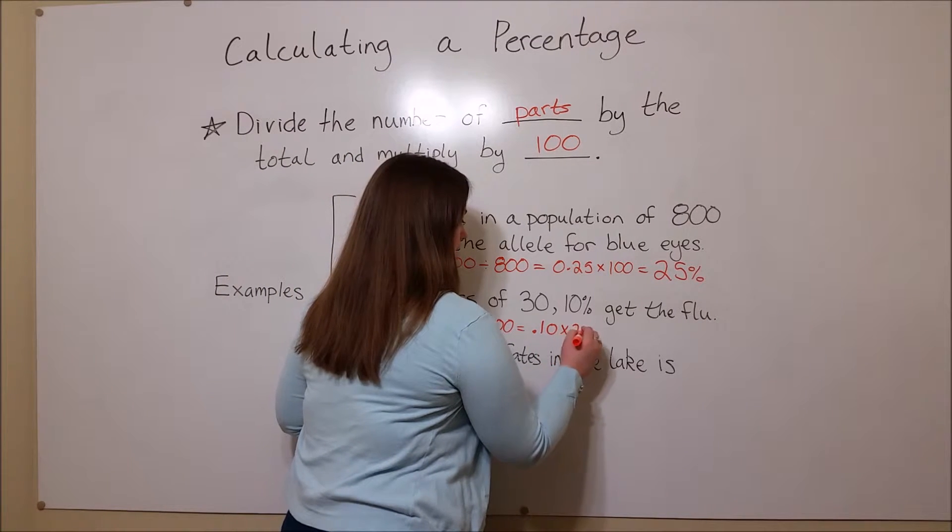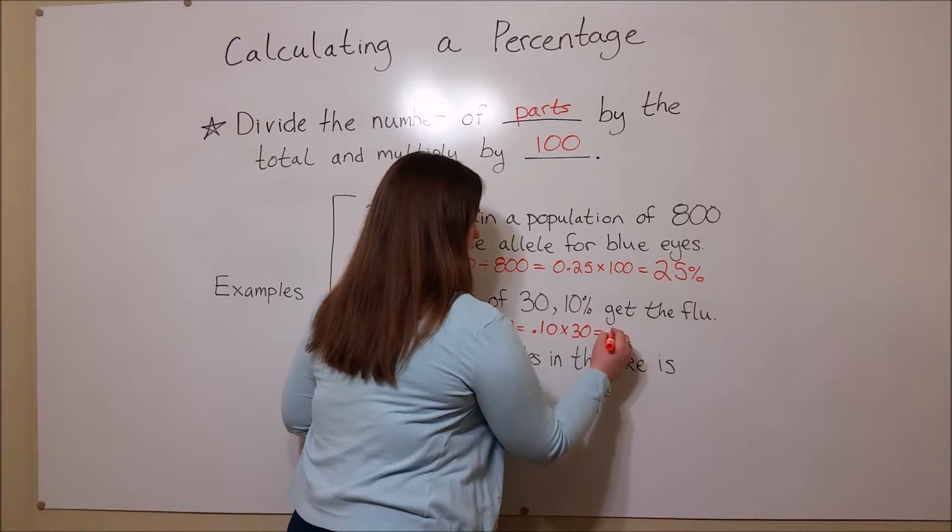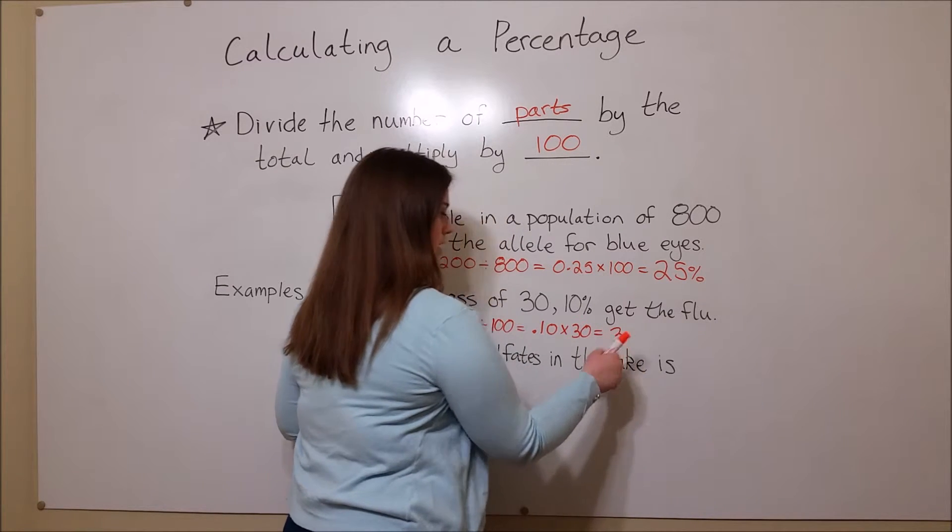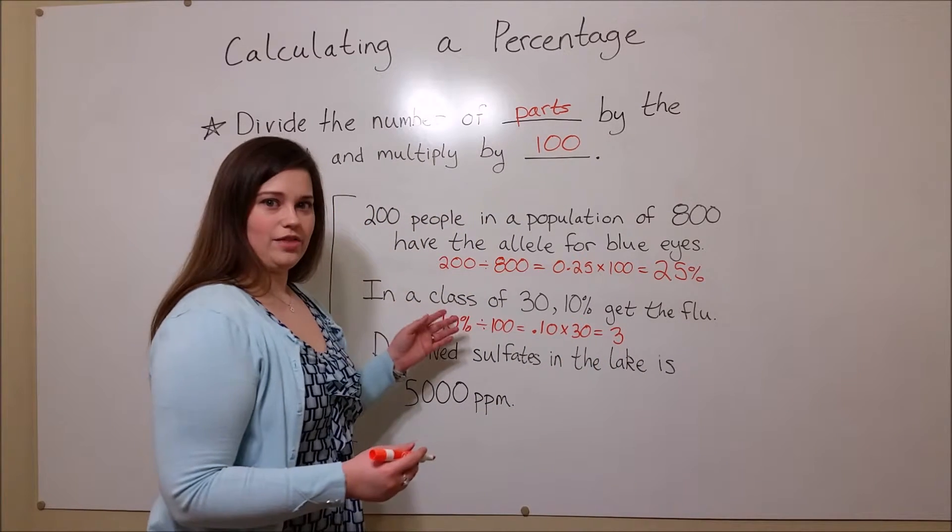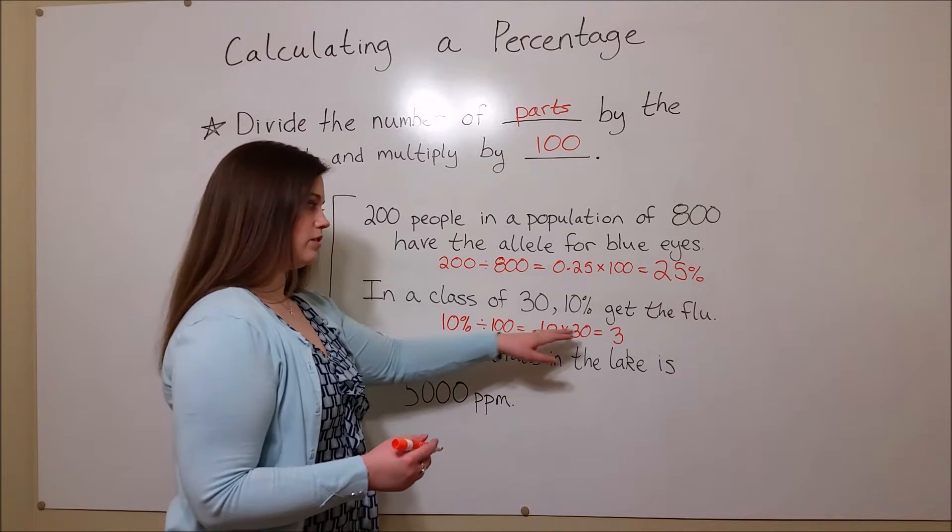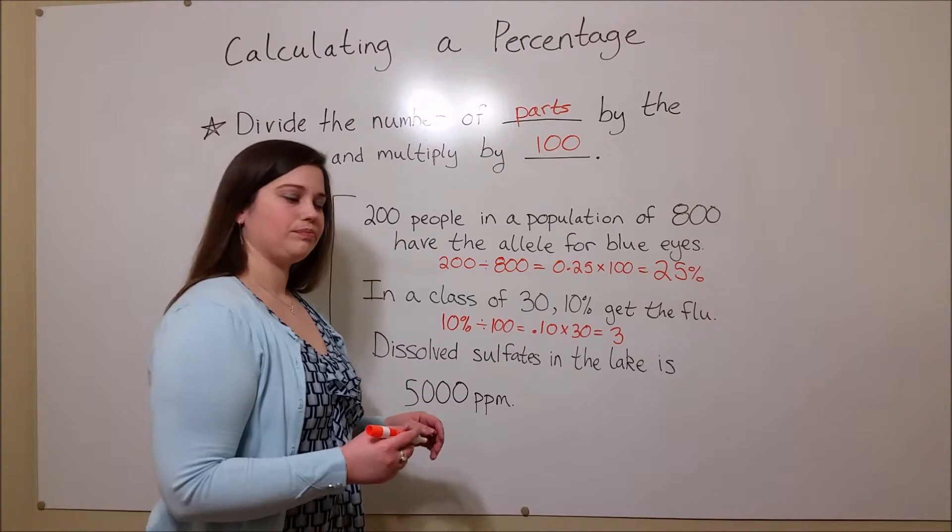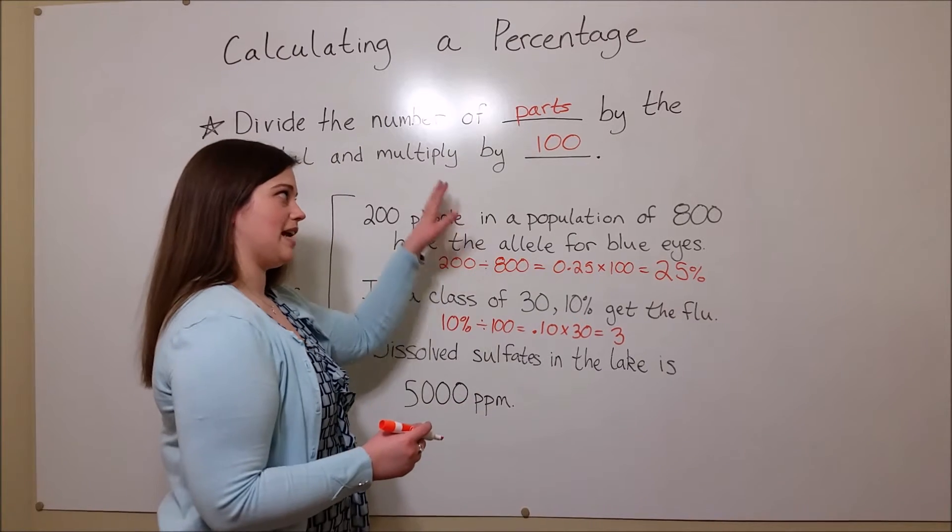So multiply by the total, and you get 3. So here, 3 students get the flu in this class, because 3 is 10% of 30.